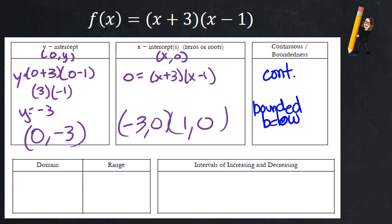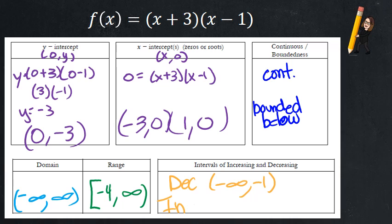Domain. Love domain. Negative infinity to infinity. Range in this case, be careful. Negative four is the lowest. It goes up to infinity. Included negative four. Increasing, decreasing. As I trace left to right, I am decreasing from the x value of negative infinity to the x value of negative one. And then from that value of negative one, I'm increasing to the x value of infinity.